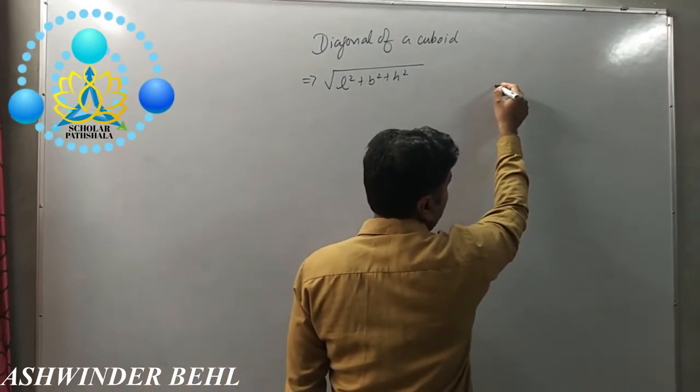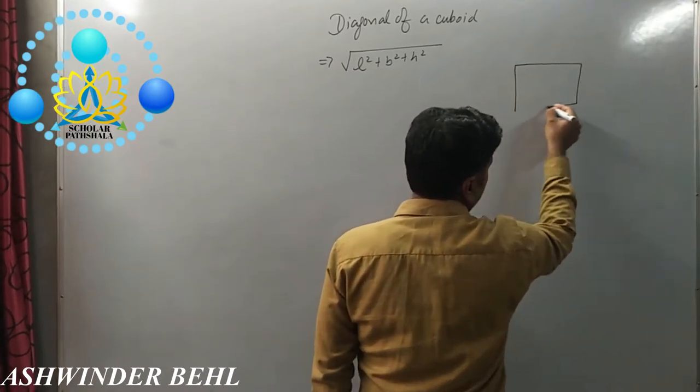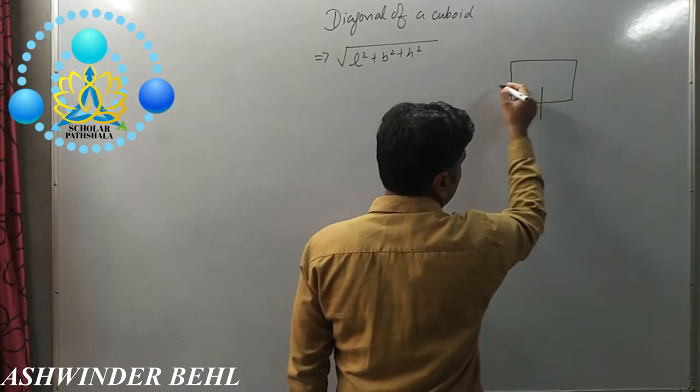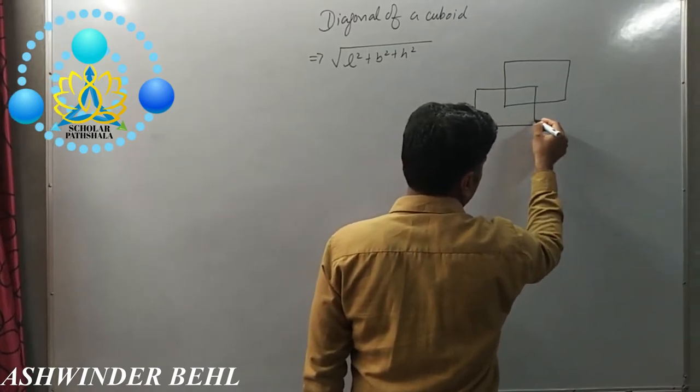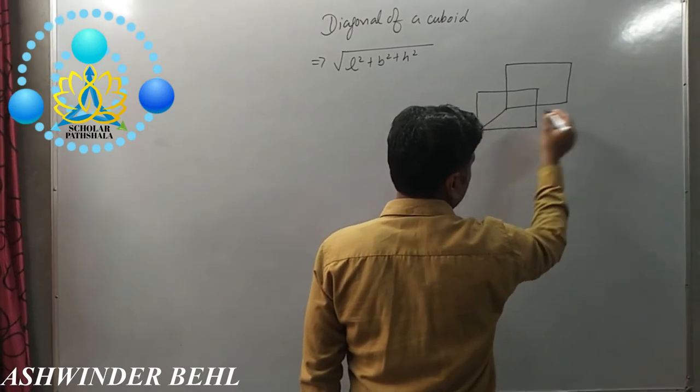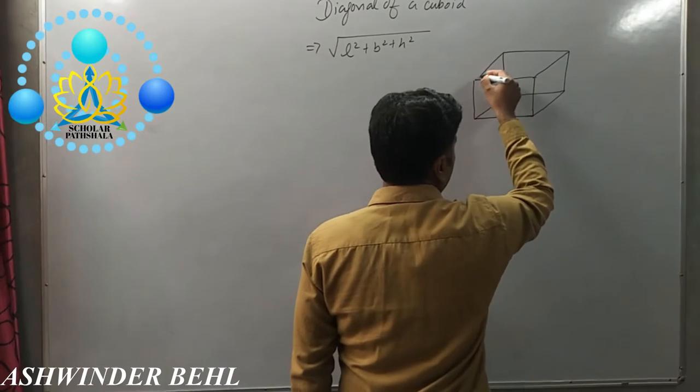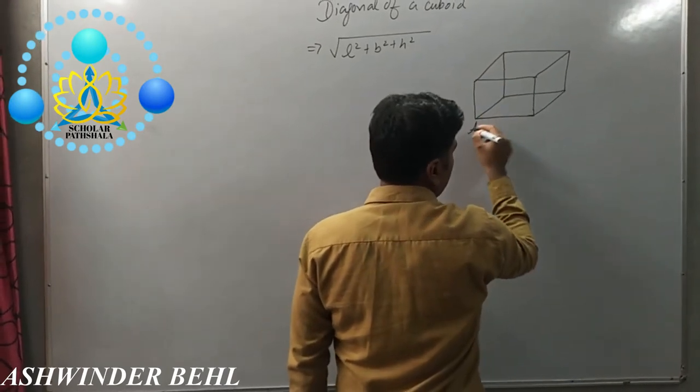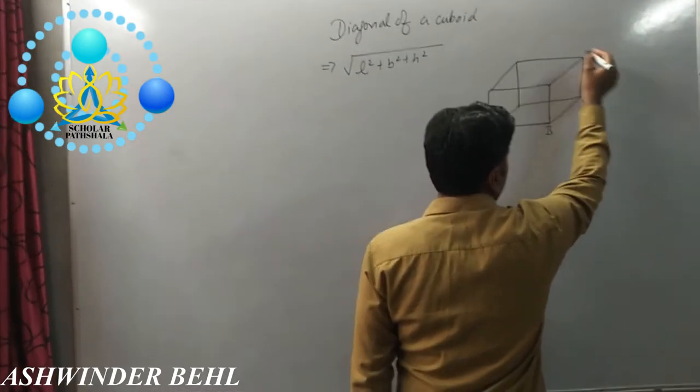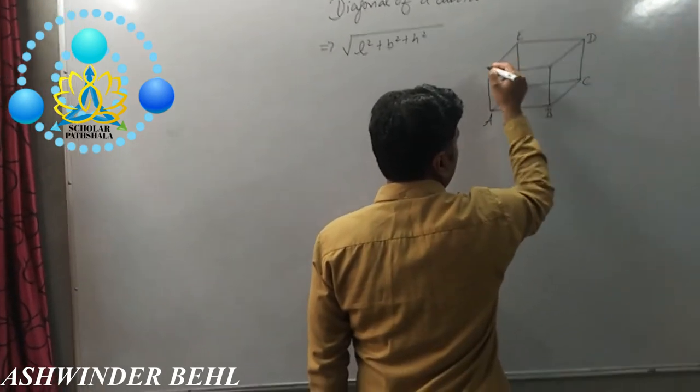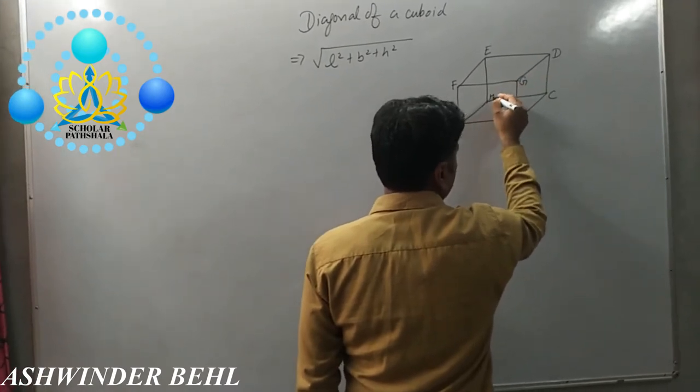First, we draw a cuboid. Now we label the vertices as A, B, C, D, E, F, G, and H.